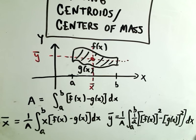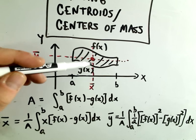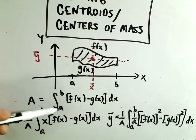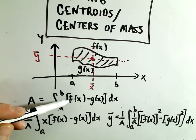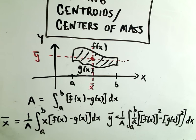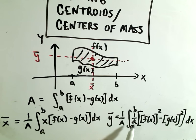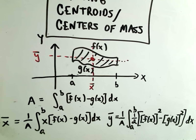The center of mass, or the centroid as it's known, is easy to calculate. You just use the formula. First we have to find the area — we've seen the area formula, it's just the integral from a to b of f of x minus g of x, top minus bottom. To get x-bar, you take 1 divided by the area, and then instead of just doing f of x minus g of x, you multiply it by x. To get y-bar, we take 1 over the area times 1 half of the quantity f of x squared minus g of x squared.